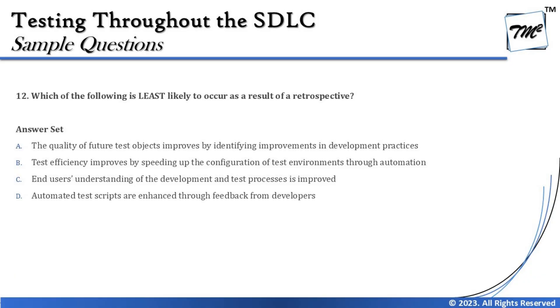Option B says the test efficiency improves by speeding up the configuration of the test environment through automation. Yes, as part of a retrospective we can discuss action items — things that can help us improve and do better. We may discuss automation of configuration management in one of our retrospectives, which could help us save time. It's not necessary to have this information from the beginning, but sometimes during a retrospective you realize that doing it automatically would save a lot of time. So yes, this could be identified as part of a retrospective.